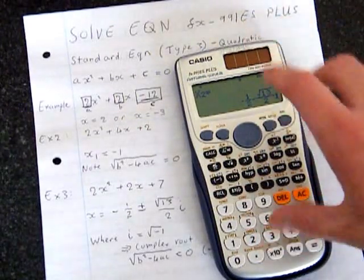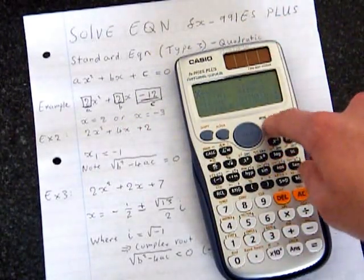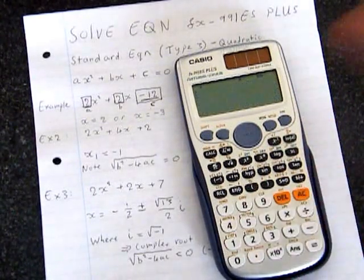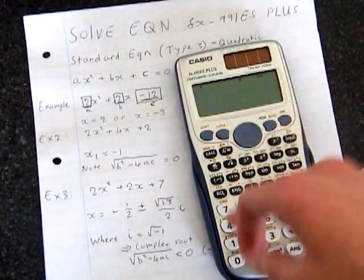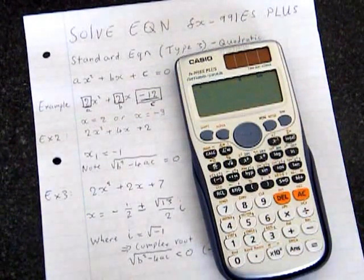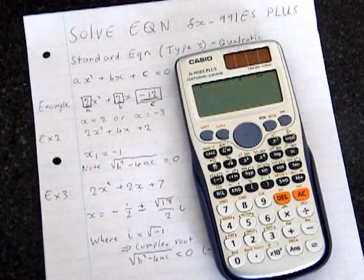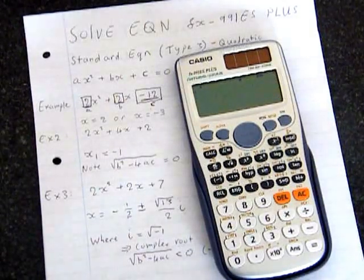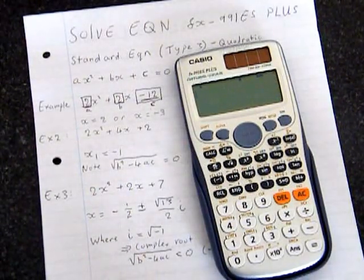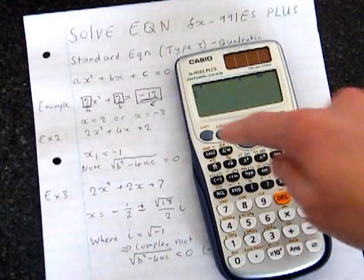And if you want to get out of this mode, just press mode and then 1. If you want to get out of any calculator mode, usually mode and then comp get you back to where you are. So there you have it. That's how you solve equations. It's very easy to do. In future videos, I'll show you how to use some of the other modes to solve different equations. Thank you for watching.